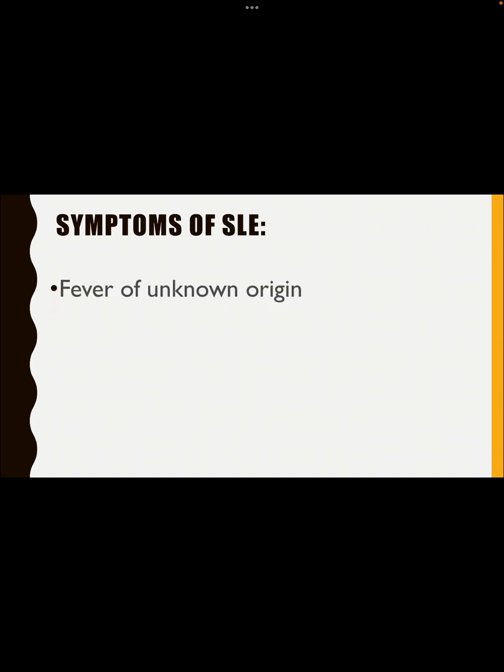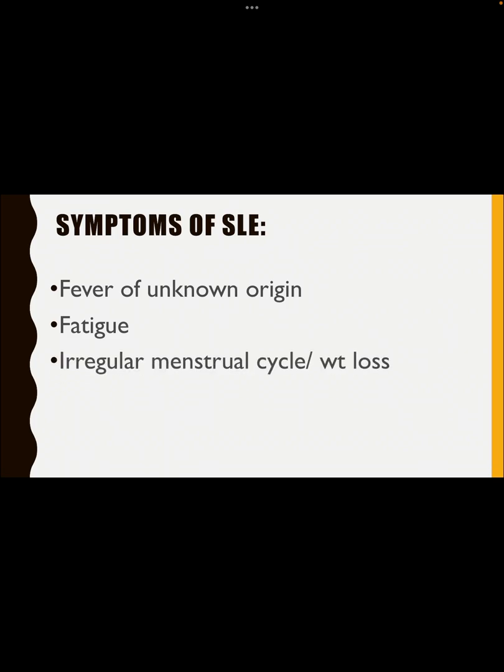Symptoms of SLE. Now in an outdoor when a female patient of reproductive age comes with symptoms of fever of unknown origin, fatigue, irregular menstrual cycle or weight loss — very, very important — irregular menstrual cycle, weight loss, and number four, unexplained hair loss. With these signs, any reproductive age female patient who comes to OPD, you have to consider SLE.